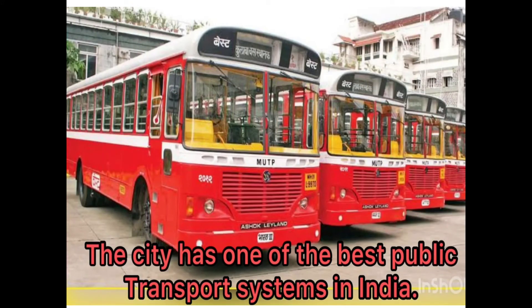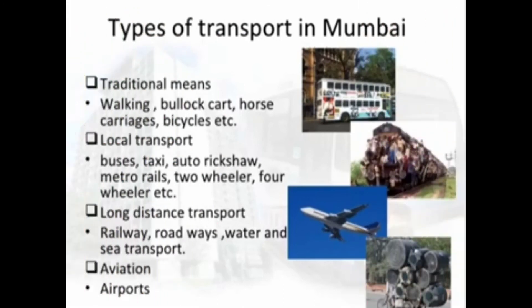The city has one of the best public transport systems in India. Types of transport in Mumbai include traditional means such as walking, bullock cart, horse carriages, and bicycle. Local transport includes buses, taxis, auto rickshaws, metro, two-wheelers, and four-wheelers. Long distance transport includes railway, roadways, water and sea transport, and aviation airports.